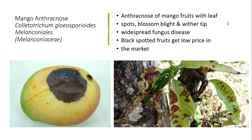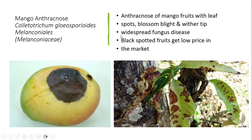This is a very important disease affecting fruits and leaves mainly. Symptoms include spots, blossom blight, and wither tip on different parts — leaves, mango fruits, flowers, and blossoms. Wither tip also occurs due to this disease. This is mainly a fungal disease.